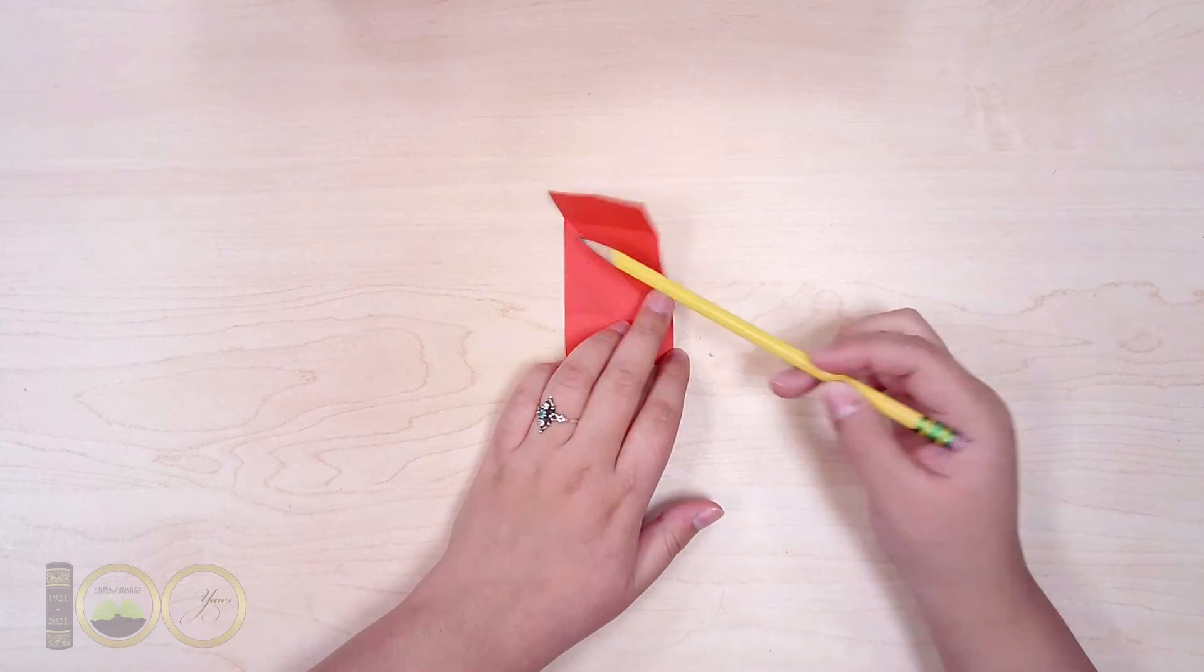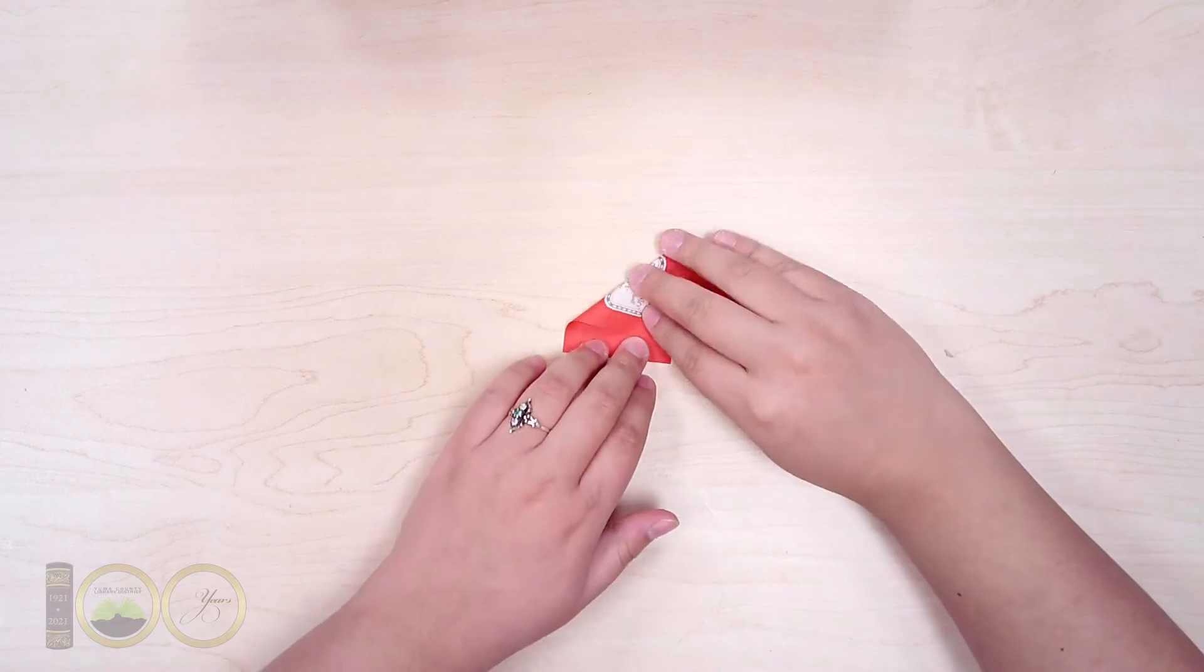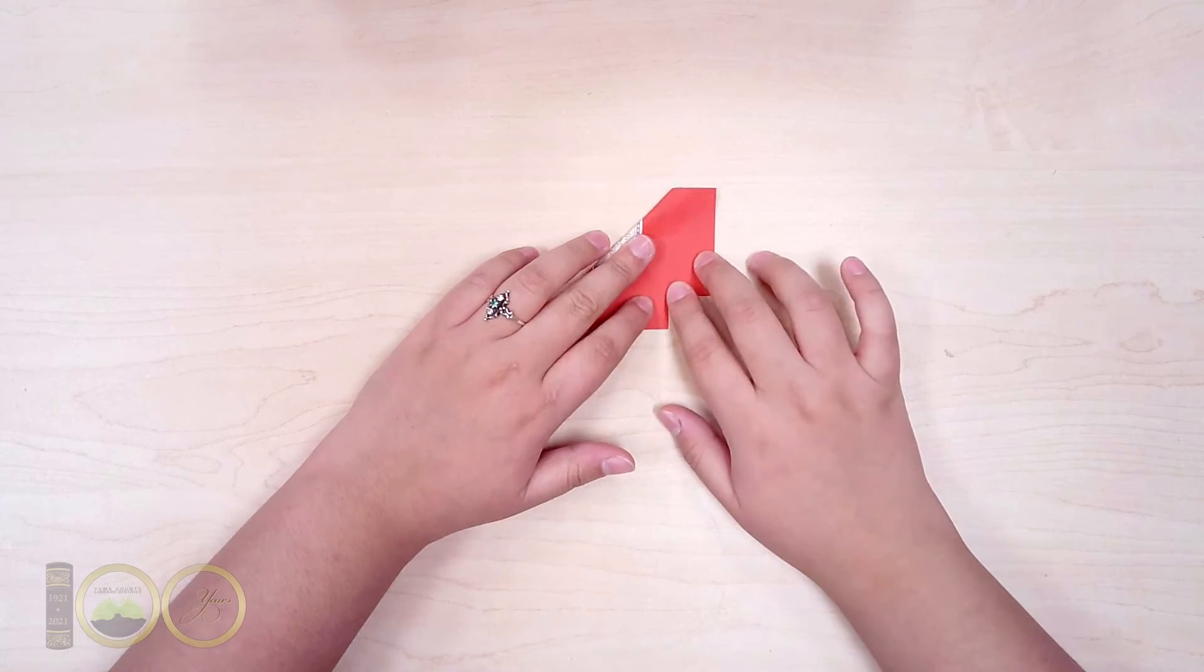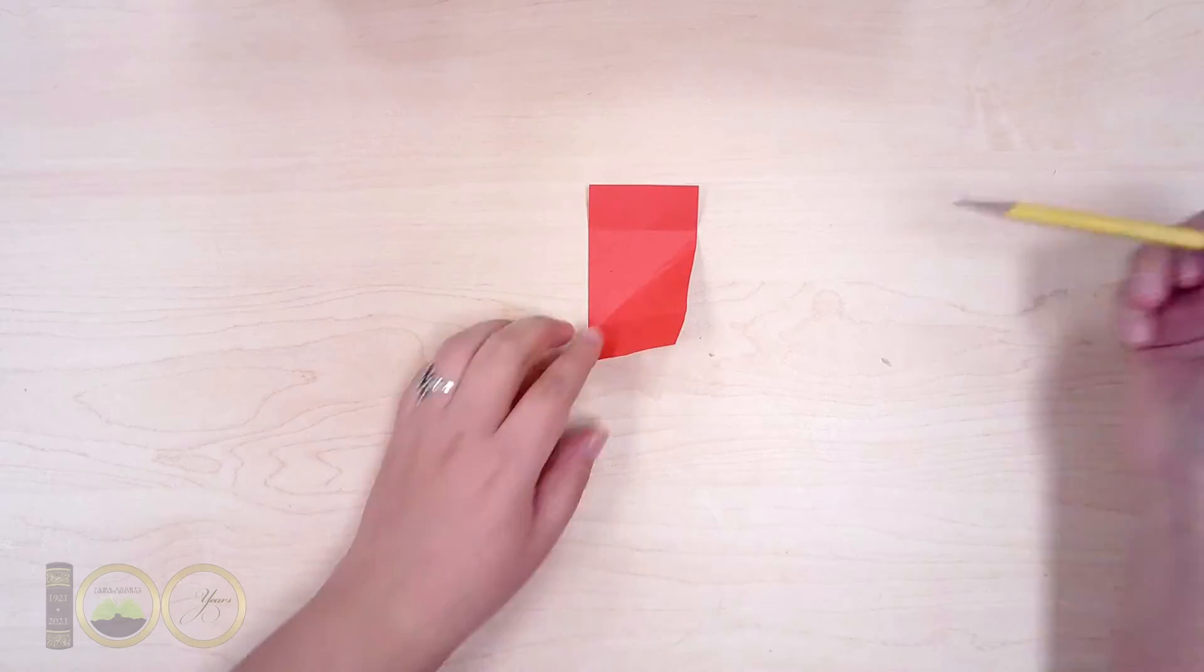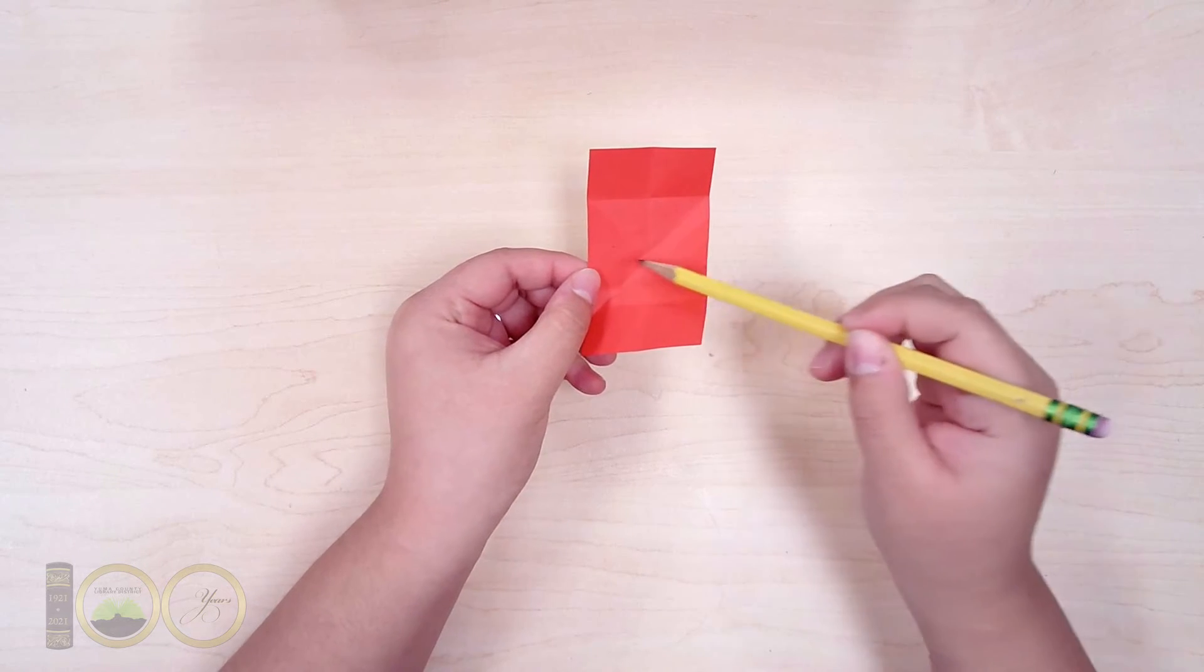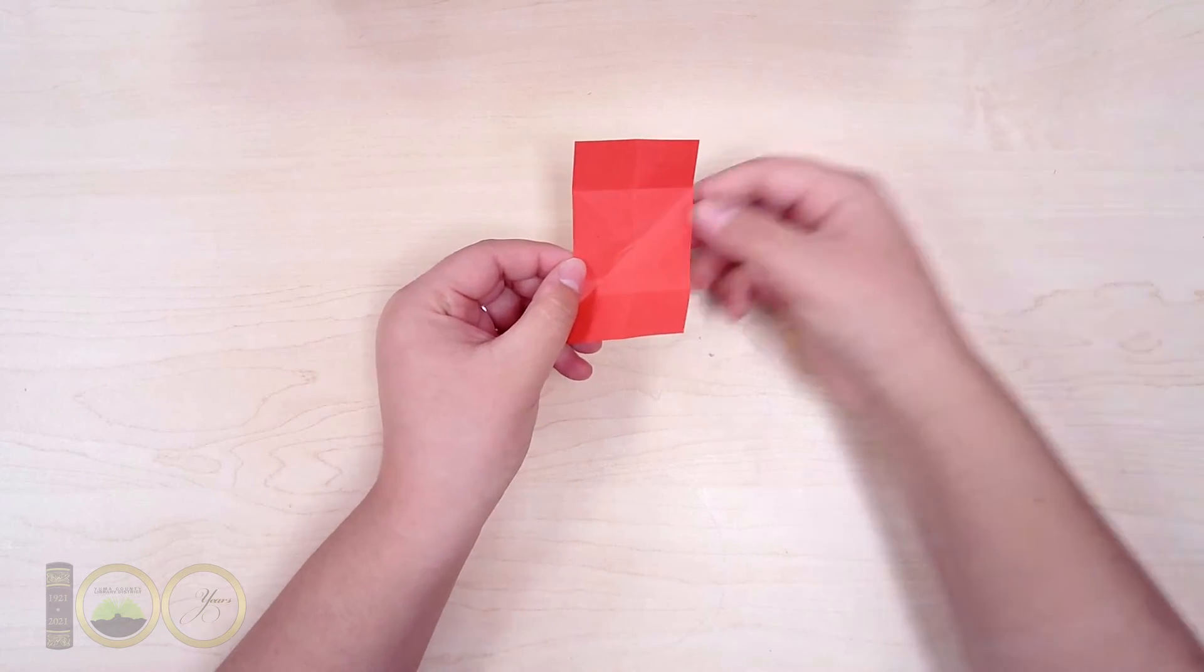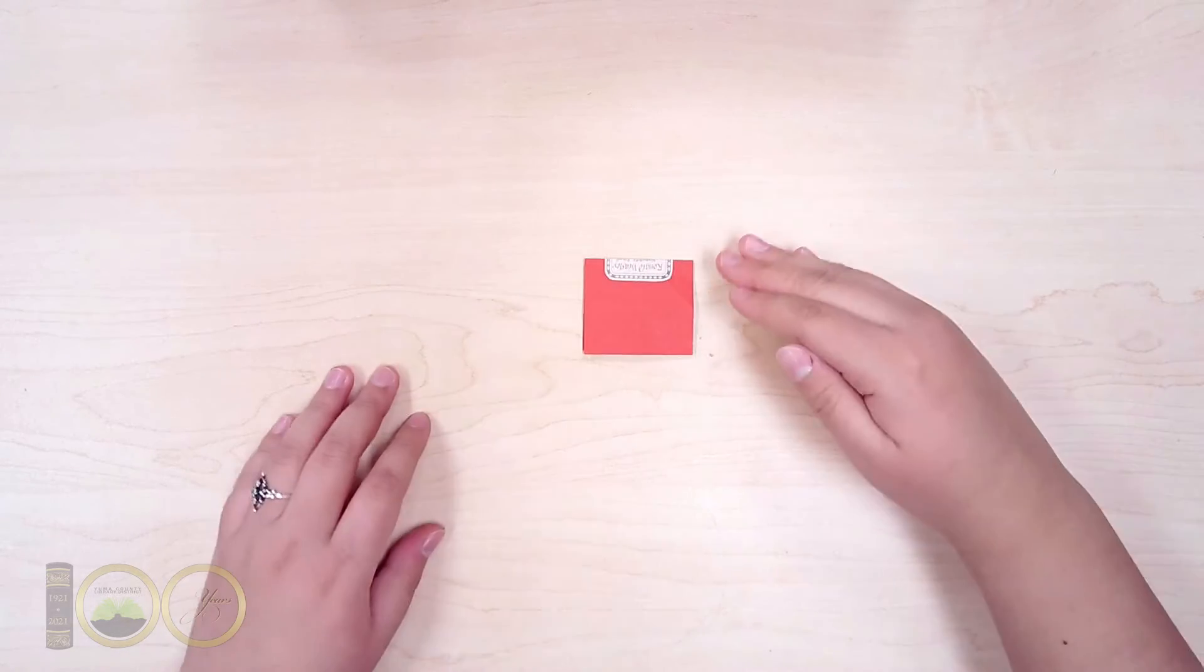Repeat that with folding the top left corner to the bottom right corner. Where the two diagonal folds created a center point, fold the paper horizontally. Then unfold.